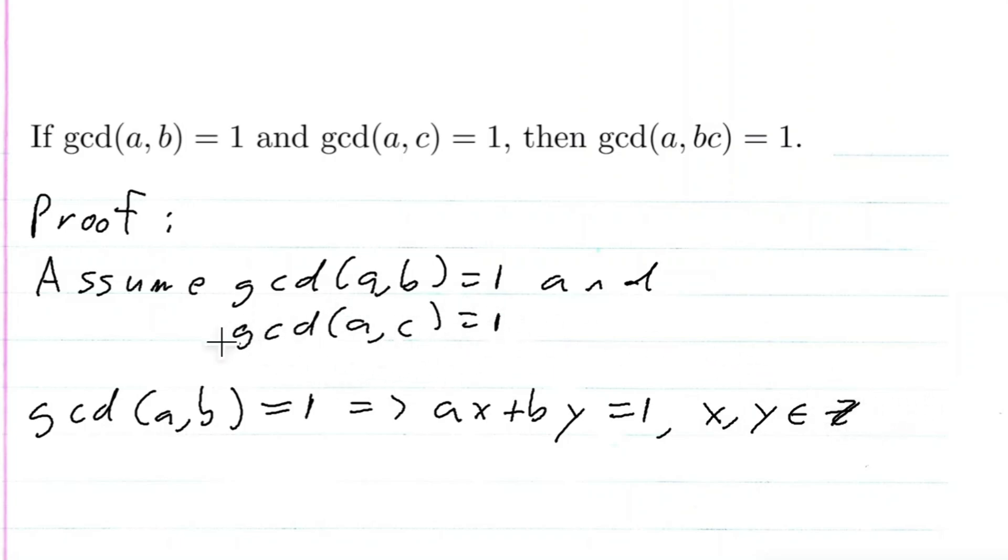Similarly with GCD of A and C, so GCD of A and C is equal to one, implies that we can write A, U plus C, V is equal to one, where U and V are integers.